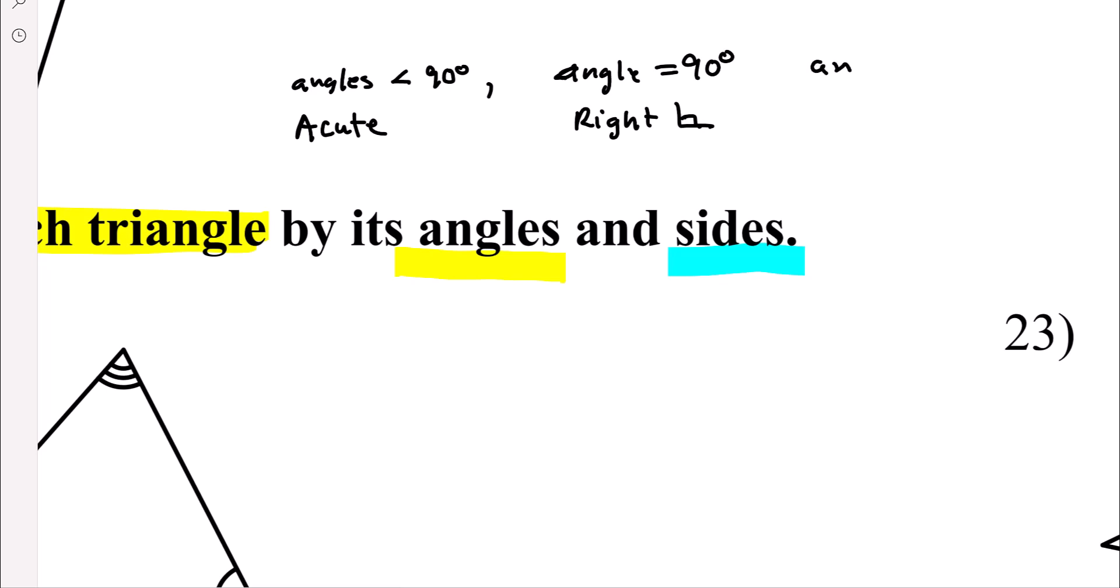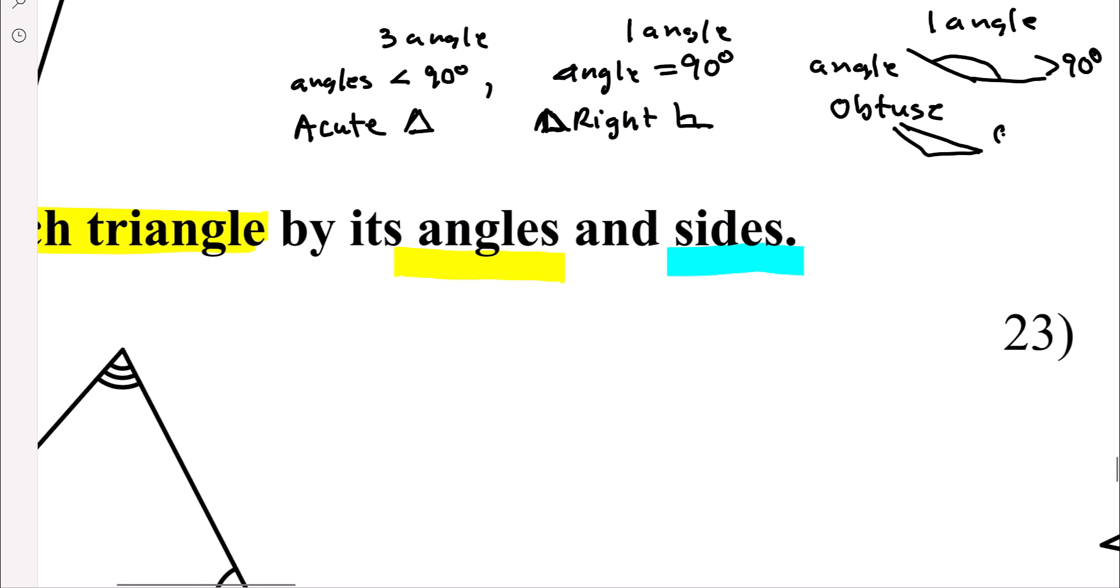And then in a triangle, there's a possibility of having a large obtuse angle, and that's larger than 90 degrees. So if all three angles are acute, then you have an acute triangle. If one angle is 90, then you have a right triangle. And if one angle is larger than 90, then you have an obtuse triangle. Those are by the angles.